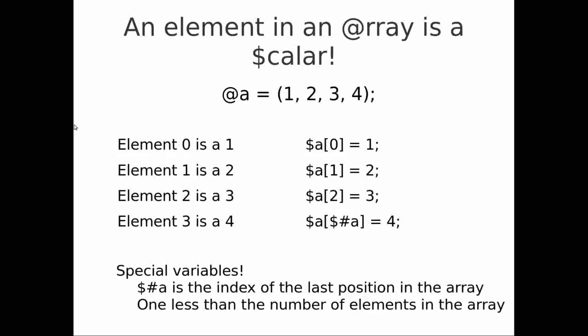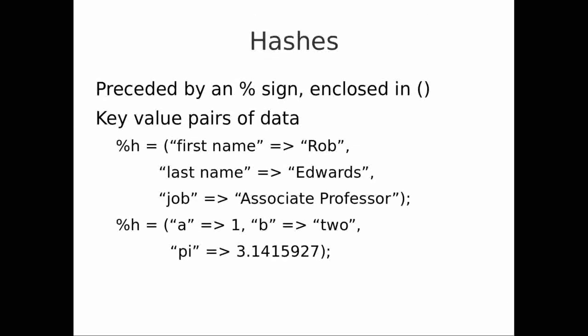We've looked at scalars, we've looked at arrays. Let's take a look at hashes. Hashes are preceded by the percent sign and they're also enclosed in regular round brackets. A hash represents a key-value pair of data. For example, my first name is Rob, my last name is Edwards, my job is a professor in computer science. Each of those are key-value associations. Each key can only have one value — basically, each key has a single value associated with it. And you can have mixed data types, because Perl is loosely typed — you can mix integers, strings, and floats.